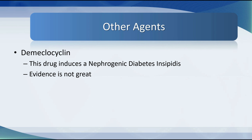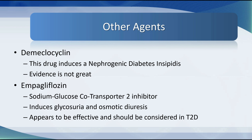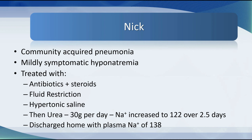Demeclocycline has been available for many decades and is licensed in most European countries for treating SIADH; it induces a nephrogenic diabetes insipidus. However, the evidence supporting this agent is not great. Newer drugs — SGLT2 inhibitors — also appear effective at restoring plasma sodium through glycosuria and osmotic diuresis, and should be considered if your patient has SIADH and type 2 diabetes, though they may cause renal dysfunction and ketoacidosis.